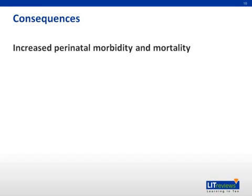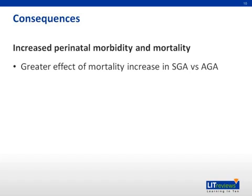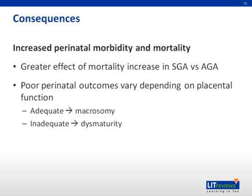Among the most important things you have to know is that the consequence of prolonged pregnancy is an increased risk of perinatal morbidity and mortality. Data shows that this effect is even greater in fetuses that are small for gestational age compared to those adequate for gestational age. The main determinant of the type of morbidity and mortality associated with prolonged pregnancy is placental function. The fetus relies 100% on the placenta for its nutrition. If the placenta continues to work appropriately, the fetus will continue to grow, being adequate for gestational age but at higher risk of macrosomia. Conversely, if placental function is inadequate, the fetus will be literally starving, increasing its risk of being small for gestational age and developing dysmaturity syndrome.